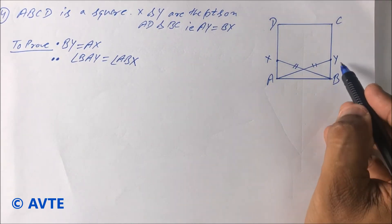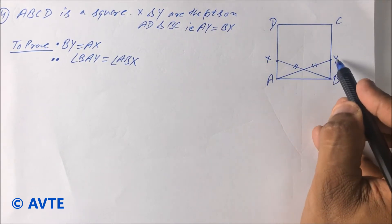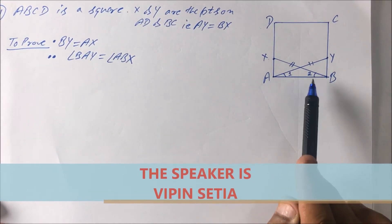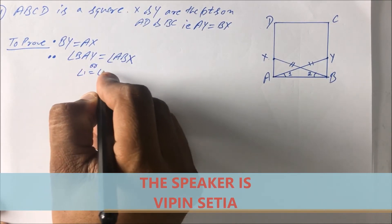You have to prove that BY is equal to AX and angle BAY is equal to angle ABX. This is angle number 1. This is angle number 2. You have to prove that angle 1 is equal to angle 2.